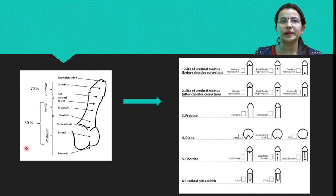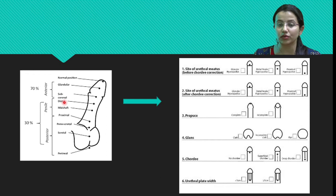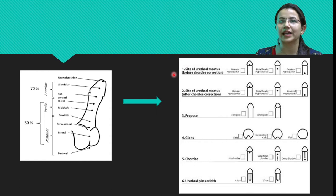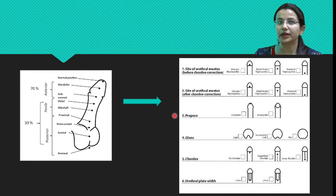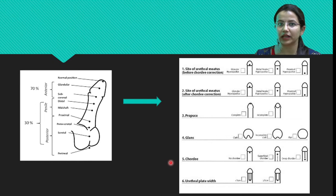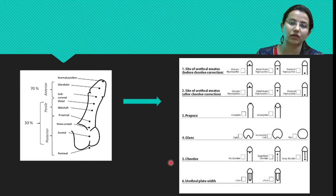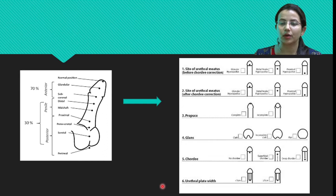The distribution of hypospadias shows anterior hypospadias are more common, with subcoronal being the most common type. Some institutes classify hypospadias by marking the site of the urethral meatus before and after chordee correction on a chart. Comments should include whether the glans is complete or incomplete, how the navicular fossa appears, the degree of chordee, and whether the urethral plate is wide or narrow.